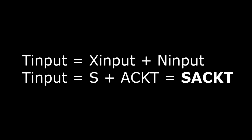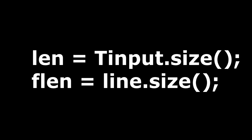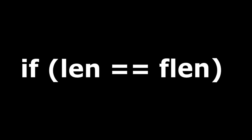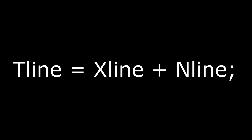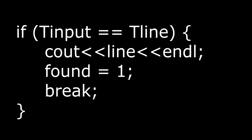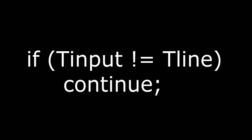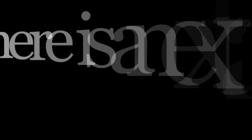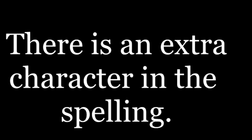Now add the first character and the sorted string together such that it looks like 'sackt'. Compare its length with the word taken from the file. If lengths are equal, do the same thing with the word taken from the file as done with the word entered by the user. Now compare both strings. If strings are equal, print the word taken from the file, make found equals one, and break all loops. If strings are not equal, keep checking. At the end, return found.